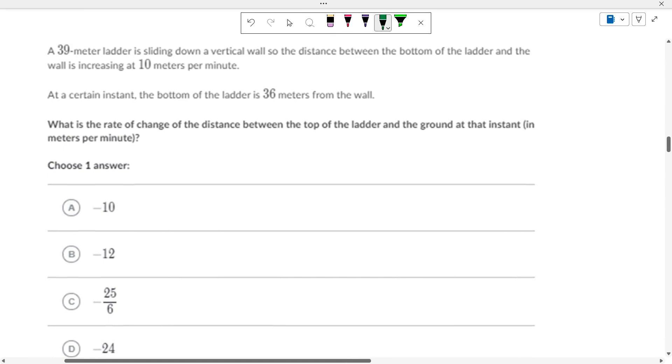A 39-meter ladder is sliding down a vertical wall, so the distance between the bottom of the ladder and the wall is increasing at 10 meters per second. At a certain instant, the bottom of the ladder is 36 meters from the wall. 39 squared minus 36 squared. I need help on that. 39 squared minus 36 squared. 15.